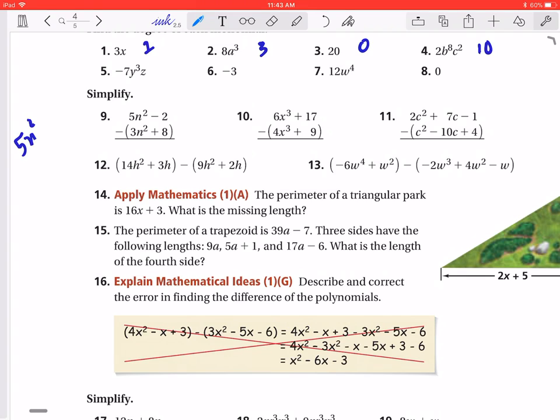So then if I have 5n² minus 2, this is going to become, I need to distribute that negative to both terms. So there's going to be minus 3n² minus 8. So then that's going to become a negative eight, nine, ten. And then that's going to be 2n².